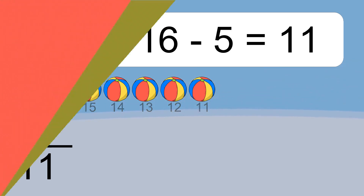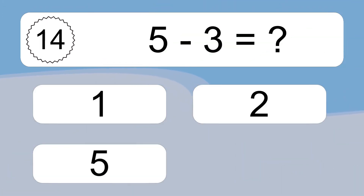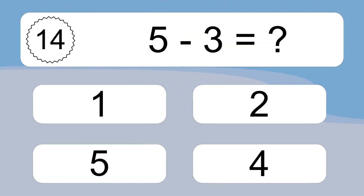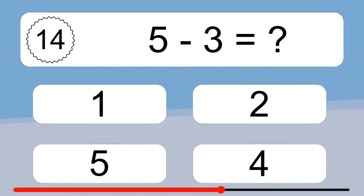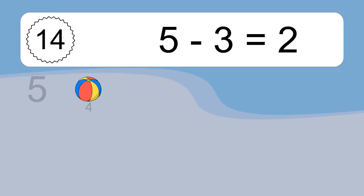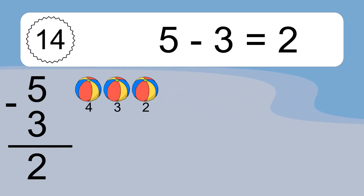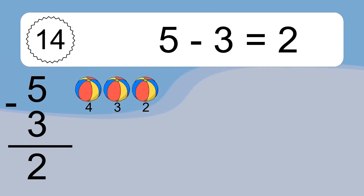5 minus 3 equals what? 5 minus 3 equals 2. Let's count it: 4, 3, 2.